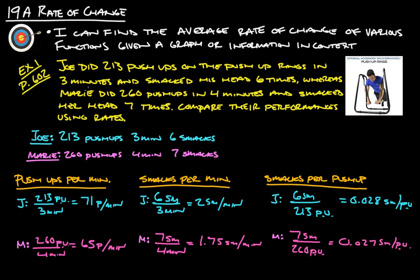Now it asks us to compare the performances using rates. So Joe does more push-ups per minute, although he didn't go for as long, so that's probably why. Joe also smacks his head more often.